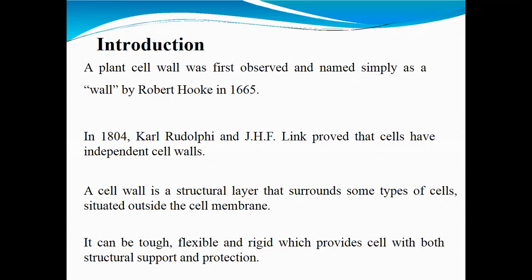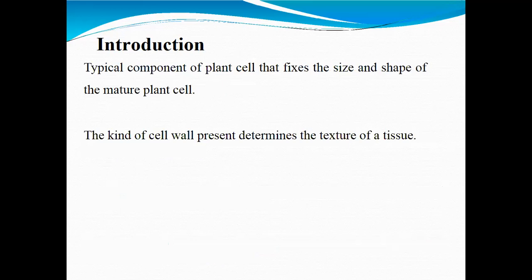A cell wall is a structured layer that surrounds some types of cells, situated outside the cell membrane in plant cells. It can be flexible, rigid, and tough, providing specific support and protection to the cell from injuries or harmful effects. It is a typical component of plant cells that fixes the size and shape of mature plant cells. The mature cell wall has an expanded cell wall compared to an immature cell wall.